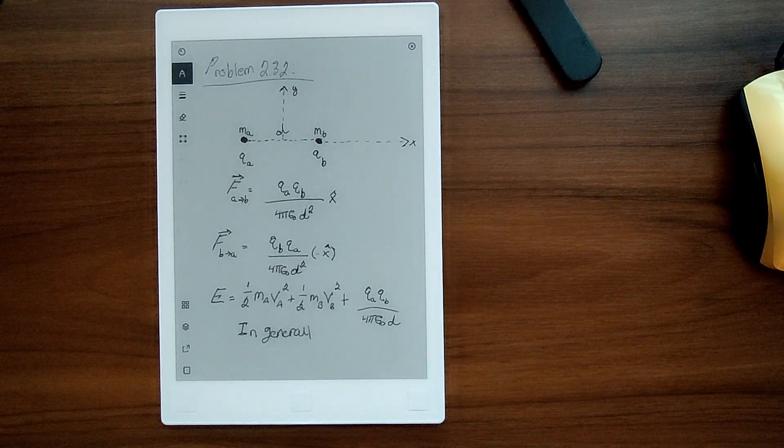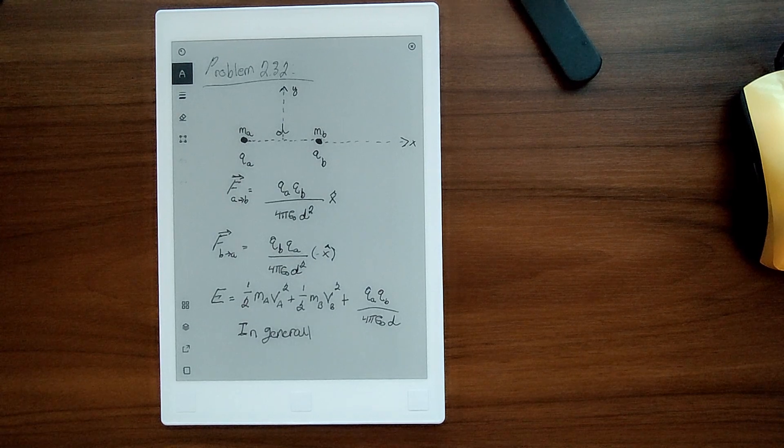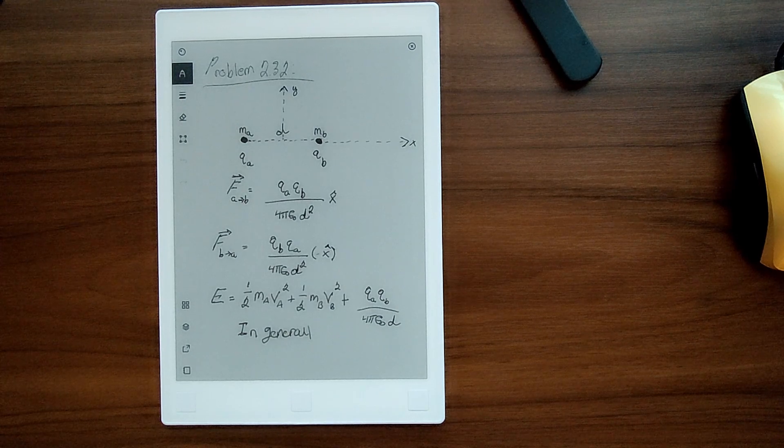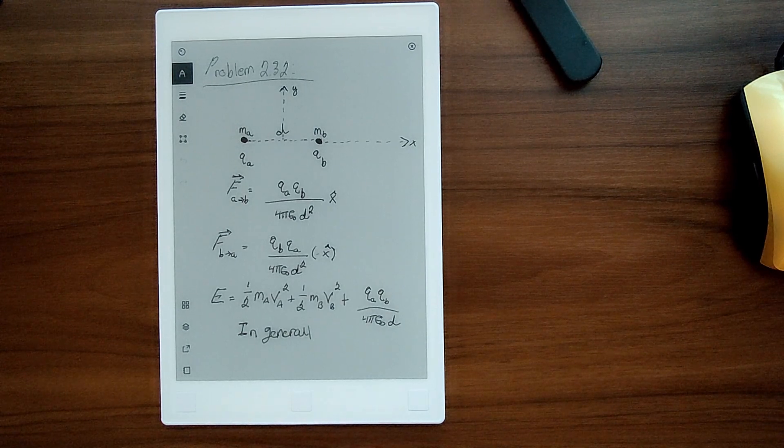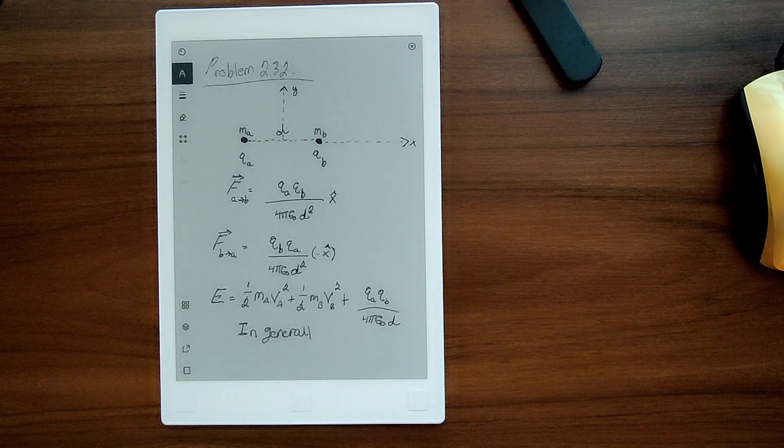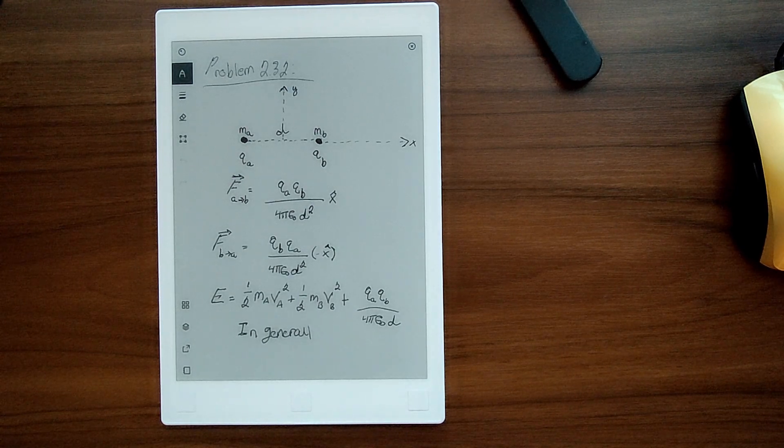This problem statement says that we have two positive point charges, qa and qb, which each have a mass of ma and mb. They are at rest, held together by a massless string of length a. Then we cut the string, and the particles fly off in opposite directions. It asks us to find how fast each one is going when they are far apart.